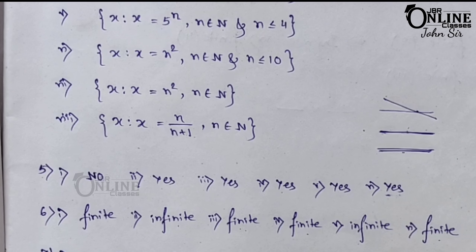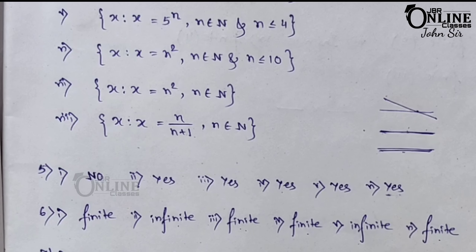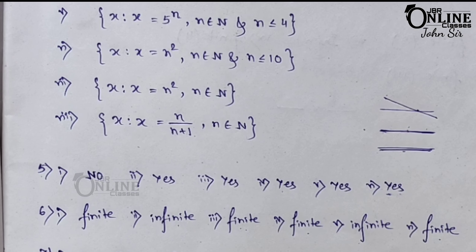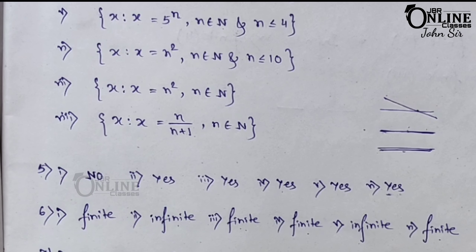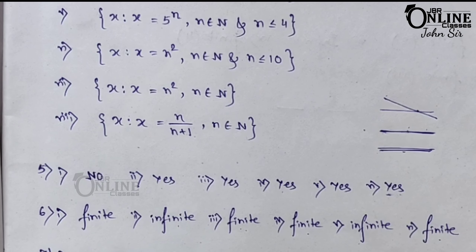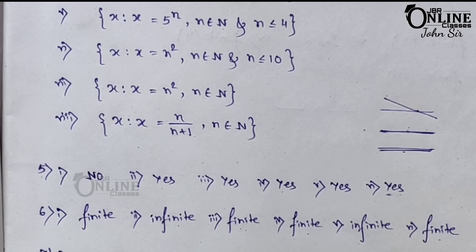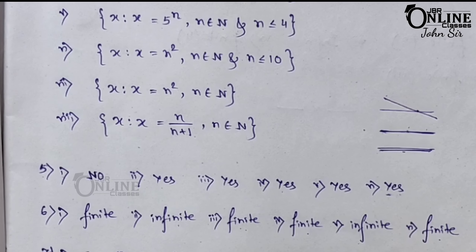Now number 7: find the cardinal numbers of the following sets. Cardinal number means the number of elements in a set. First one: an empty set with just curly brackets — there is no element, so the cardinal number is zero.